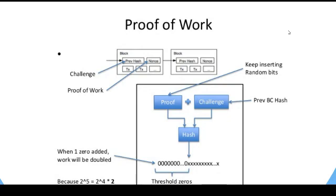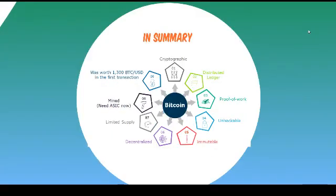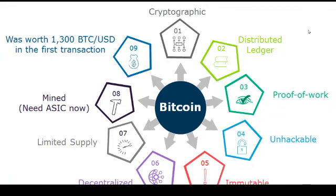The computer that successfully finds the right nonce adds the block to the chain, and other computers update their record with the new block. As a reward, it collects the 12.5 Bitcoin along with any transaction fees. In summary: Bitcoin uses cryptography for encryption; transactions are stored in a public distributed ledger; it uses proof of work to deter attacks; it is unhackable; transactions are immutable; the system is completely decentralized; the number of Bitcoins is limited in supply; new coins come into the world through mining. And the very first Bitcoin transaction was valued at 1,300 Bitcoins for one US dollar — a dollar invested at that time would be equal to 22 million dollars today.